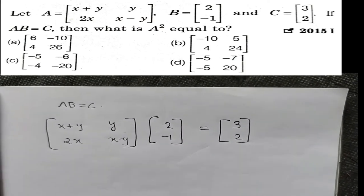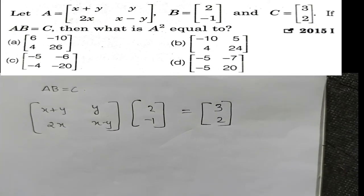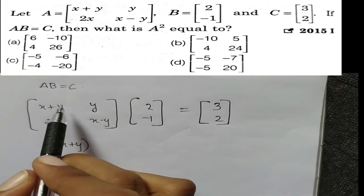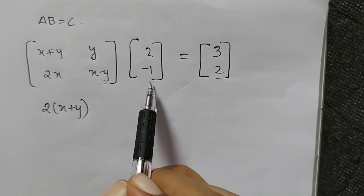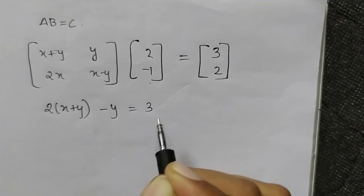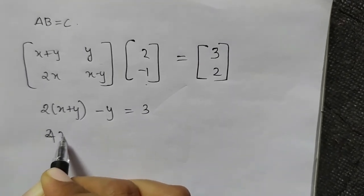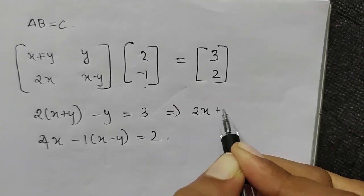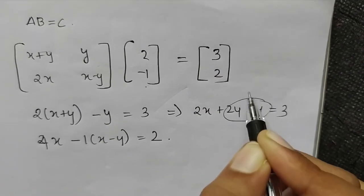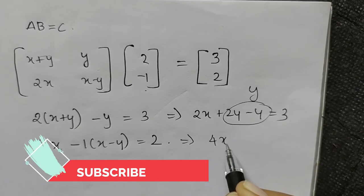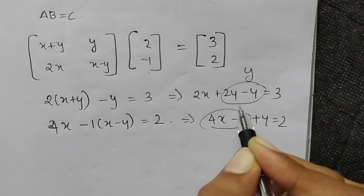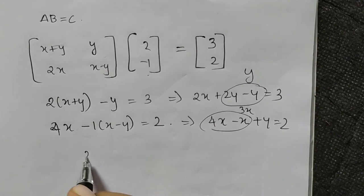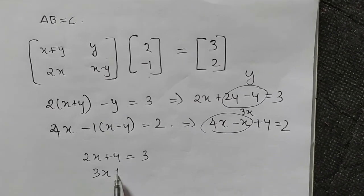This was discussed in 2015 as a matrix multiplication problem. Multiplying: 2 times (x plus y) minus y equals 3, giving 2x plus y equals 3. And 4x minus (x minus y) equals 2, giving 3x plus y equals 2.